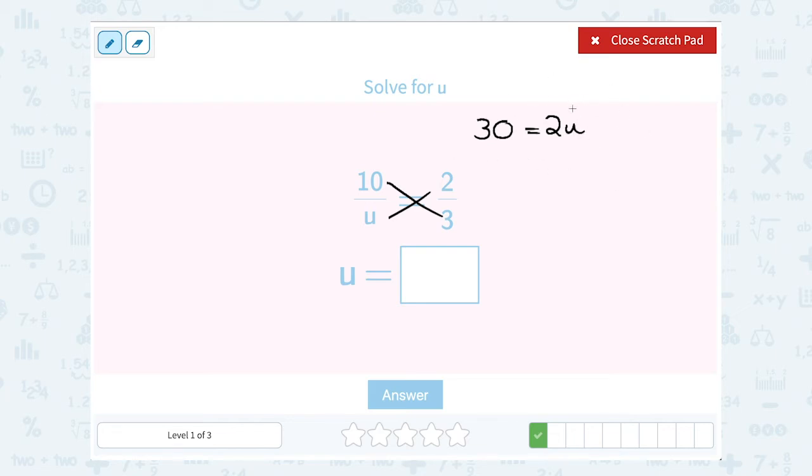We want to get u by itself. Right now, it's being multiplied by 2, so our opposite or inverse would be to divide by 2. Well, 30 divided by 2 gives me 15. And 2u divided by 2 gives us u. Multiply and divide by the same number cancels out. So u equals 15.